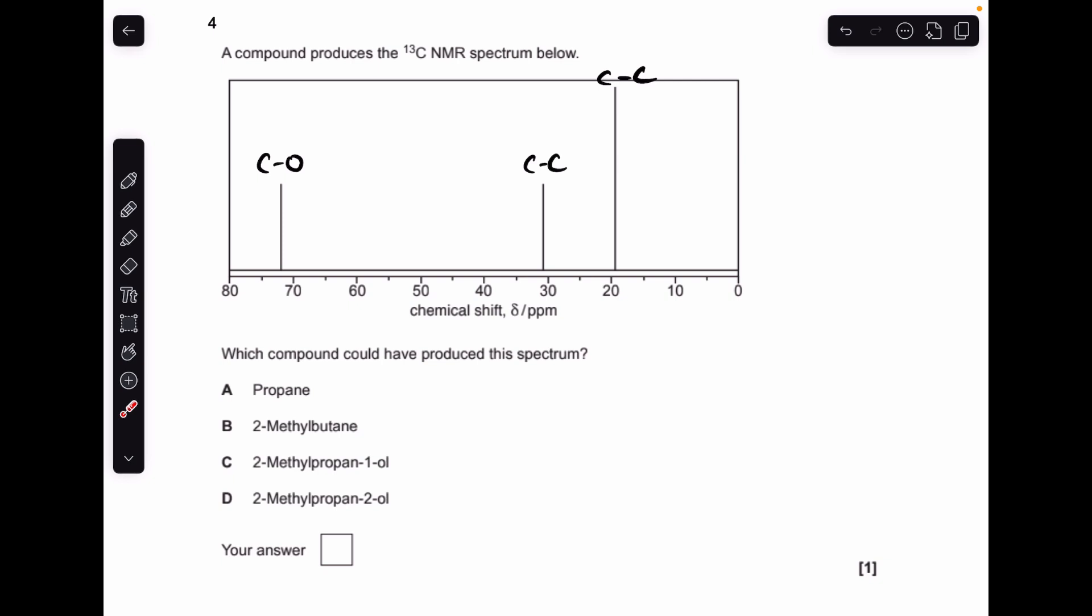Moving on to number four, so you can see I've already labelled up the type of environment for the peak. So we've got a C single bond O environment here, and we've got two different C-C environments, so straight away we can rule out A and B, because they wouldn't have that C single bond O, because they're just alkanes, so it's down to C and D.